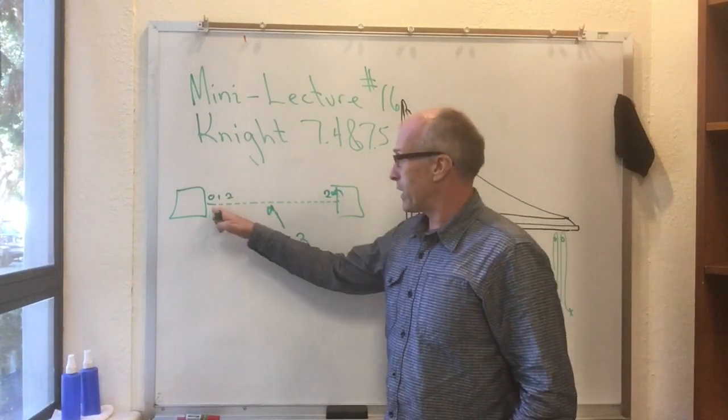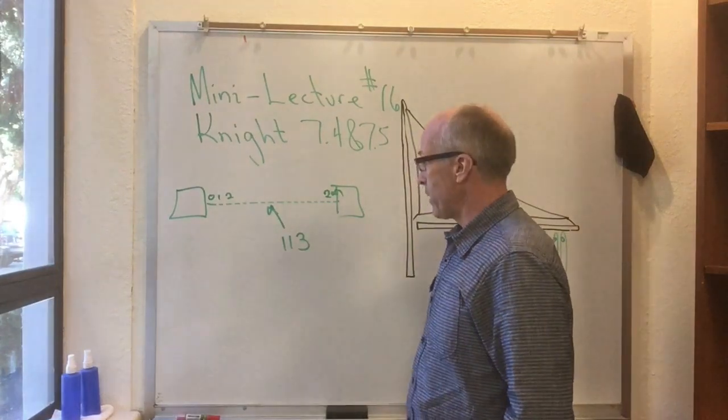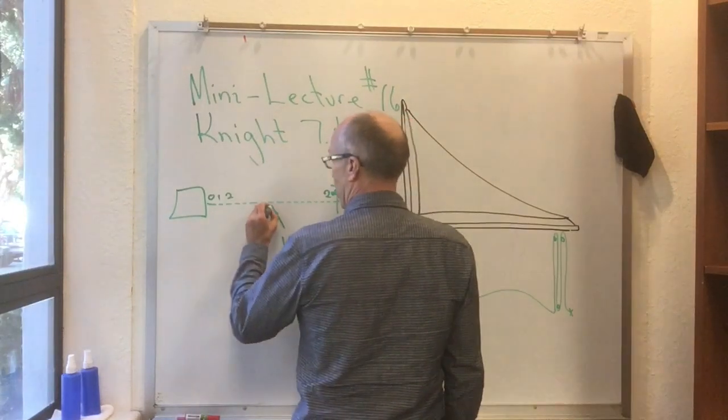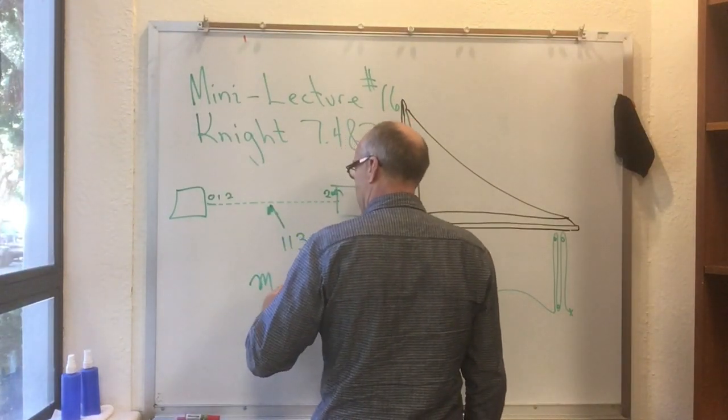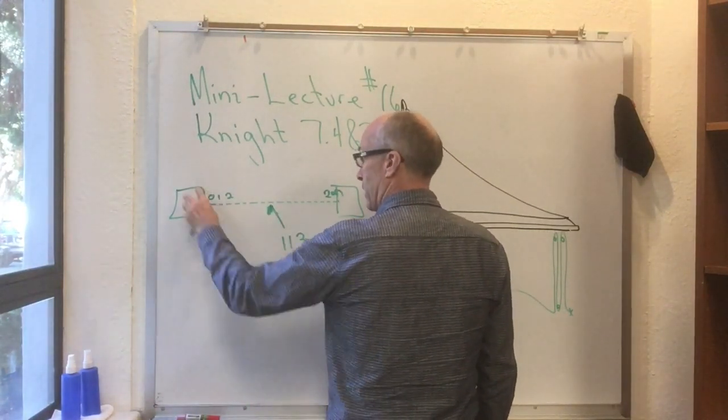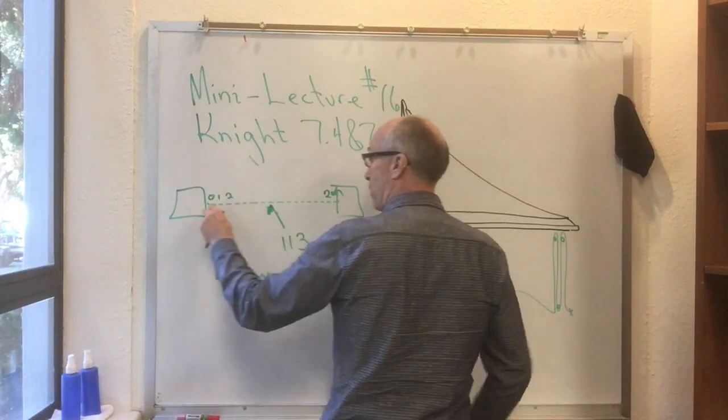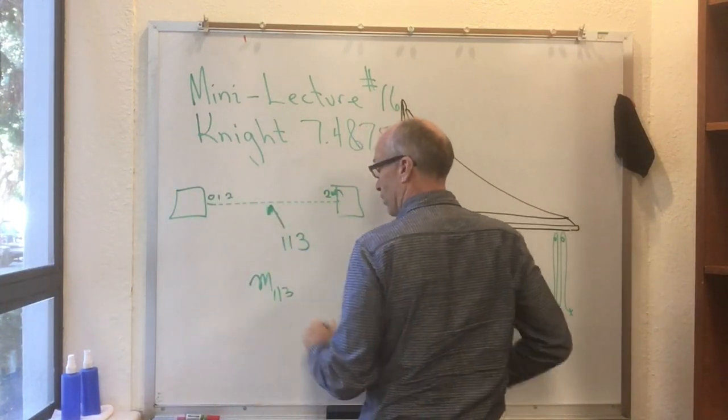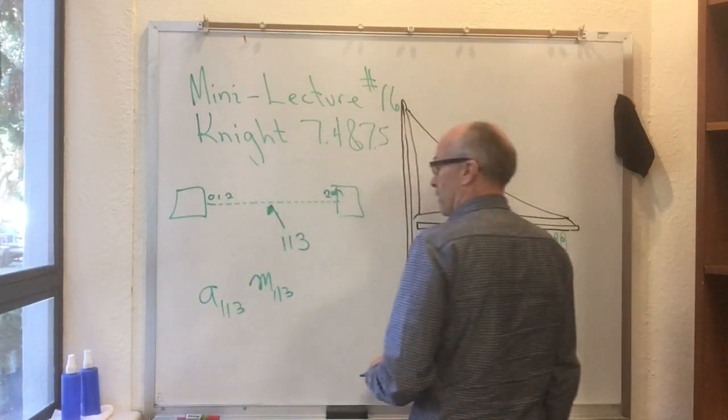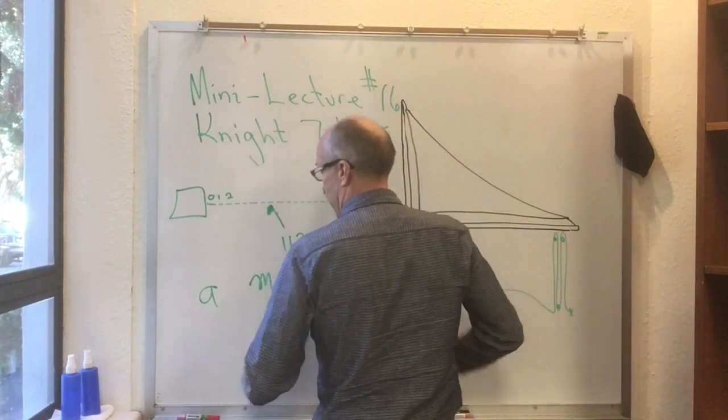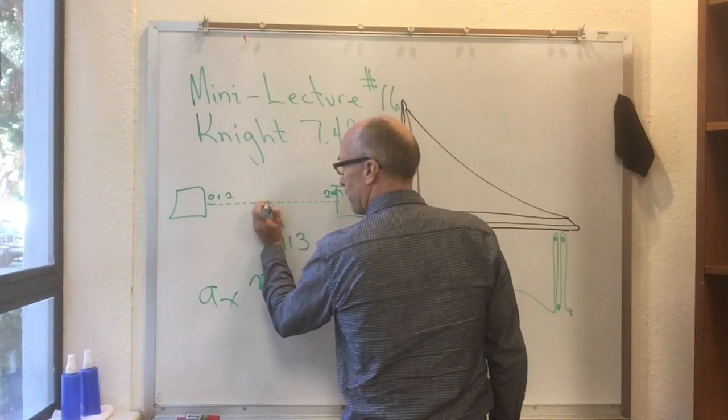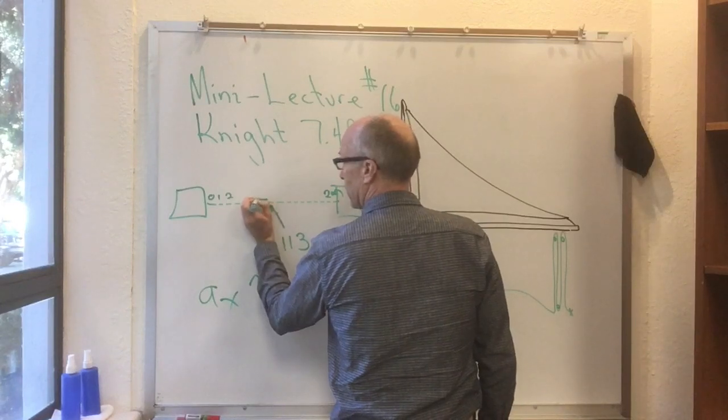Well, if we can neglect the weight of this string, then we can certainly neglect the weight of chunk number 113 of this string. So if I gave it a little name, like M113, and I said, well, this little thing here has some acceleration. It's attached to this block, and it's attached to that block. And whatever these two blocks are doing, this thing is doing too. So it has some acceleration that's going to be A113. If all these things are moving together, then there's only one A, which I might call A sub X.